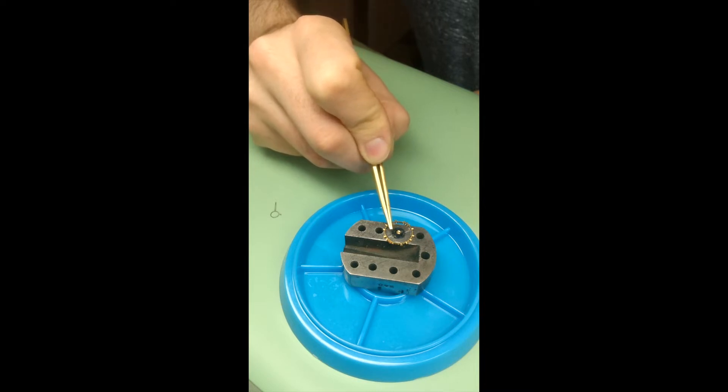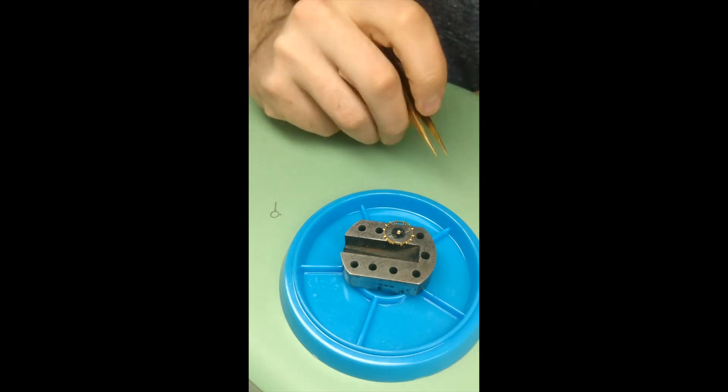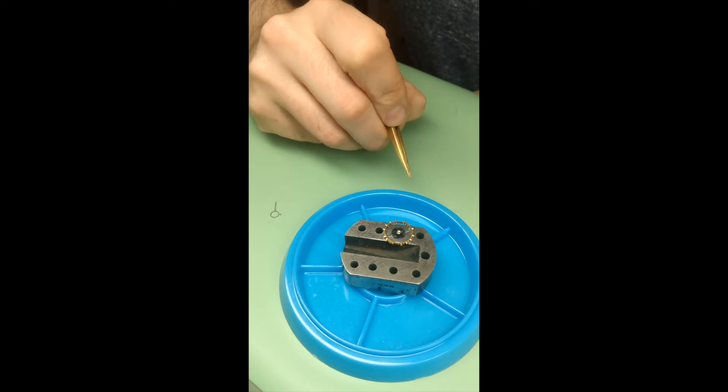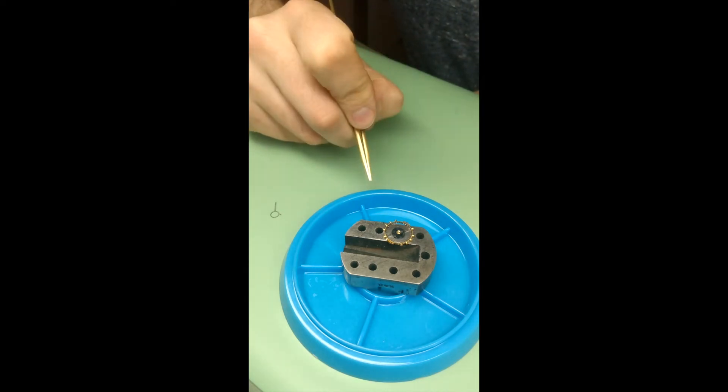Attached to the balance is a hairspring and this controls the rate at which the balance oscillates and the rate at which the hands turn around the dial.